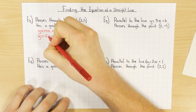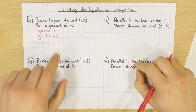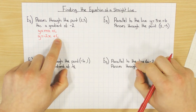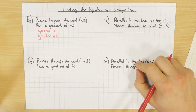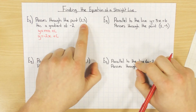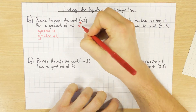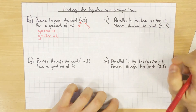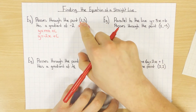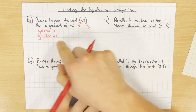y equals minus 2x plus c. So we're halfway there already. The next thing we need to do is find the value c. When we drew the line it was really easy because we could just see where it crossed the y-axis. However, the only other bit of information we have now is the coordinate (2, 3). But that's all we need because with a coordinate, you have an x value and a y value. Remember, the first one's x and the second one's y.